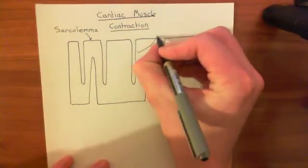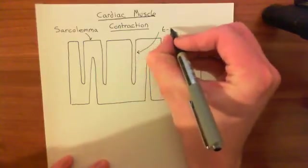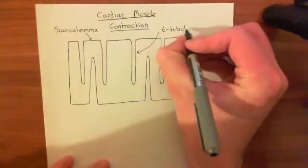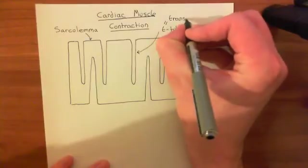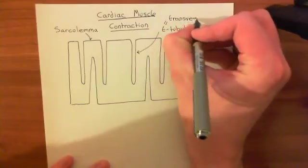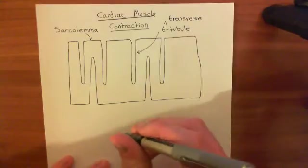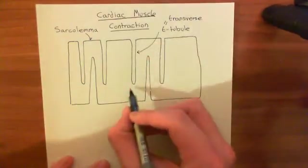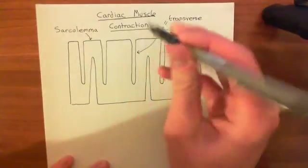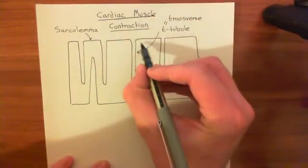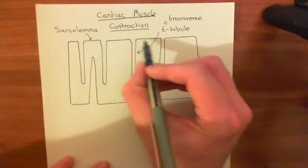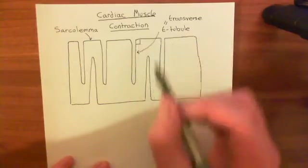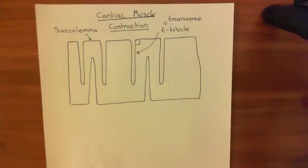These are called T-tubules, and the reason they're called T-tubules is that this T stands for transverse. Transverse is another word for perpendicular to. The invagination, this tubule digging deep into the cytoplasm, is transverse or perpendicular to the normal cell membrane. They're called transverse tubules because they're at 90 degrees to the cell membrane.